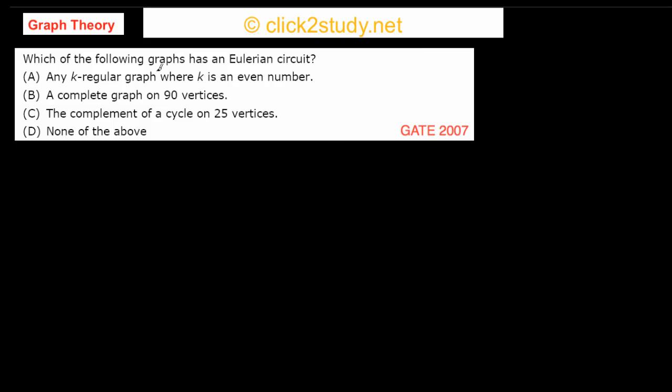The question asks which of the following graphs has an Eulerian circuit. An Eulerian circuit is a circuit in which you start at a vertex, traverse all the edges in the graph, and come back to the vertex where you started. You can go through each edge only once, and you must go through all the edges.